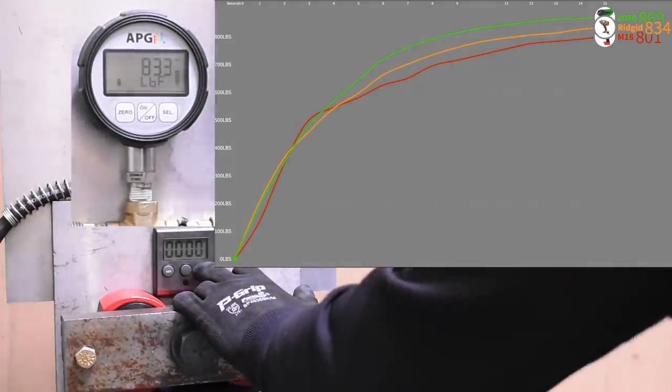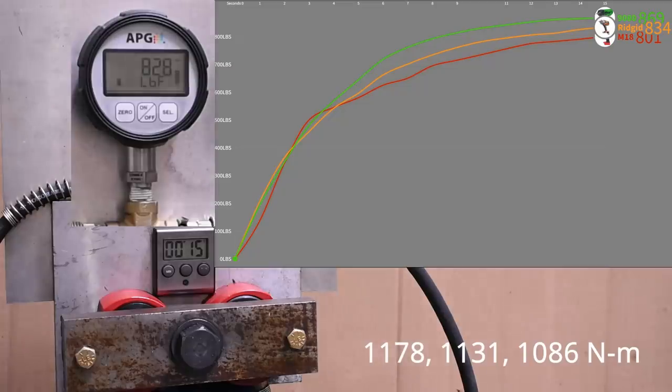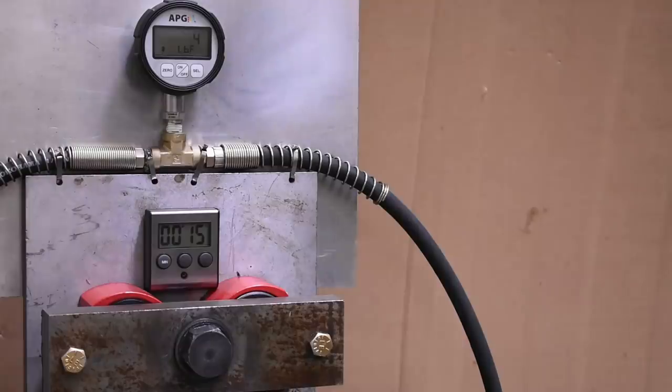So here's their best runs, the Rigid with a 9 amp hour and Milwaukee with a high output battery. That Rigid recently climbed up to a massive 834 with the addition of the 9 amp hour pack in our testing, super impressive.